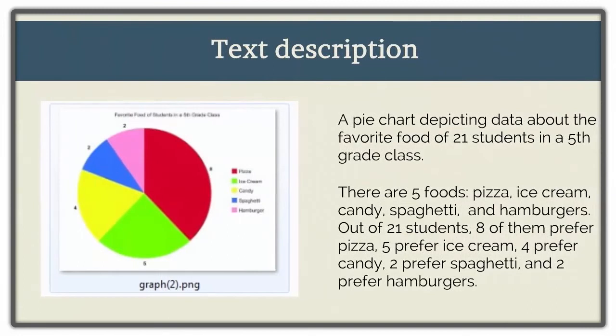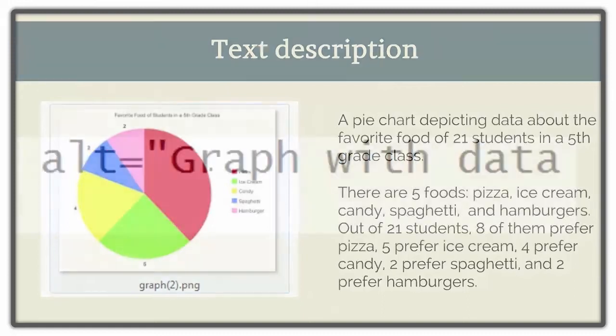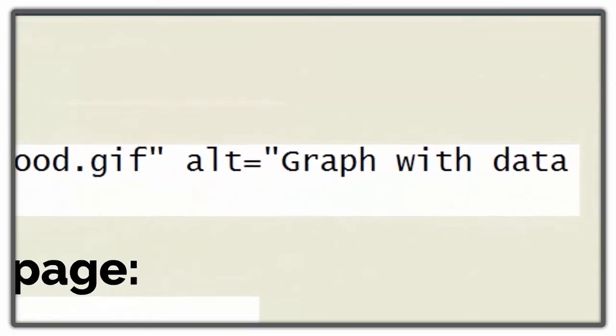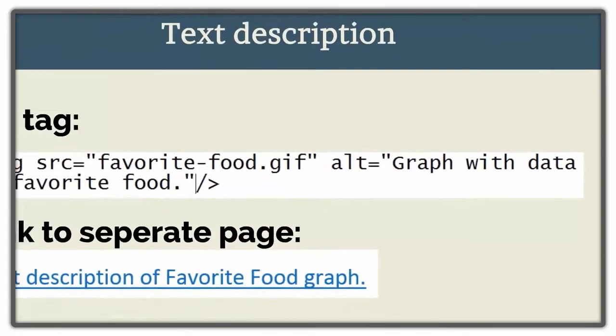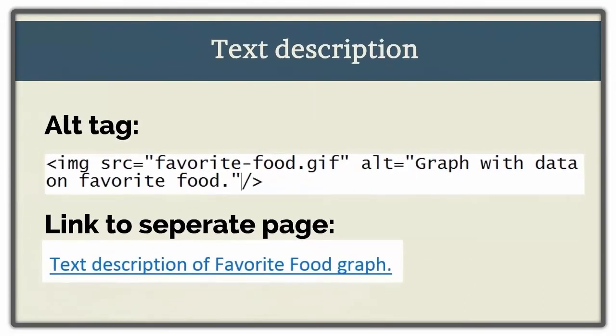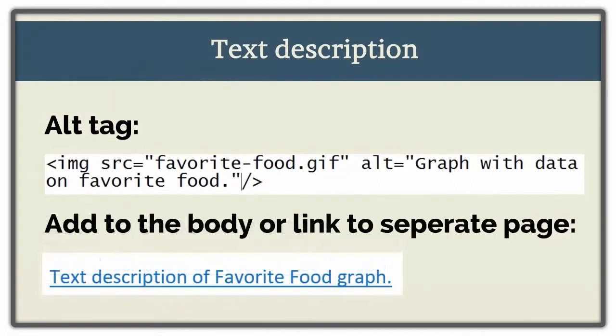One way to make this data more accessible to screen reader users is to write a long text description for graphs, charts, and maps. These descriptions are often too long to add to the alt tag of an image, which is the alt attribute in the image section of the HTML code. If your description is too long, then you can also add it to the body of a corresponding article or in a linked separate page.